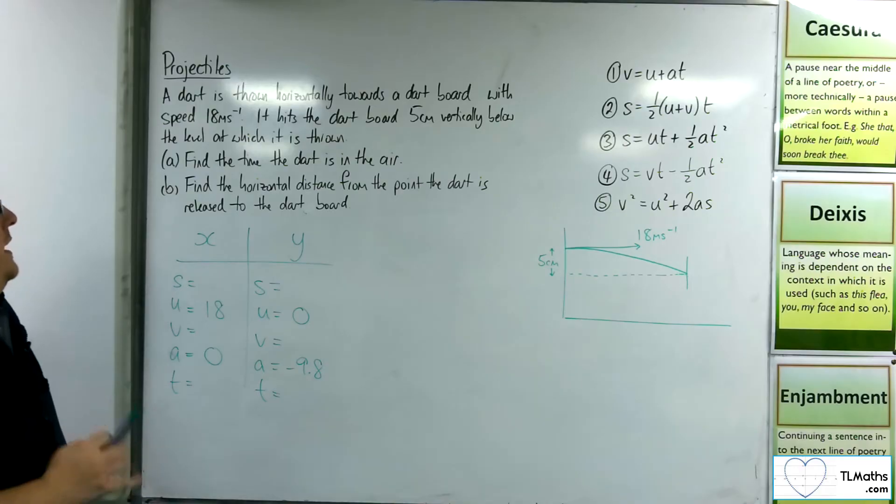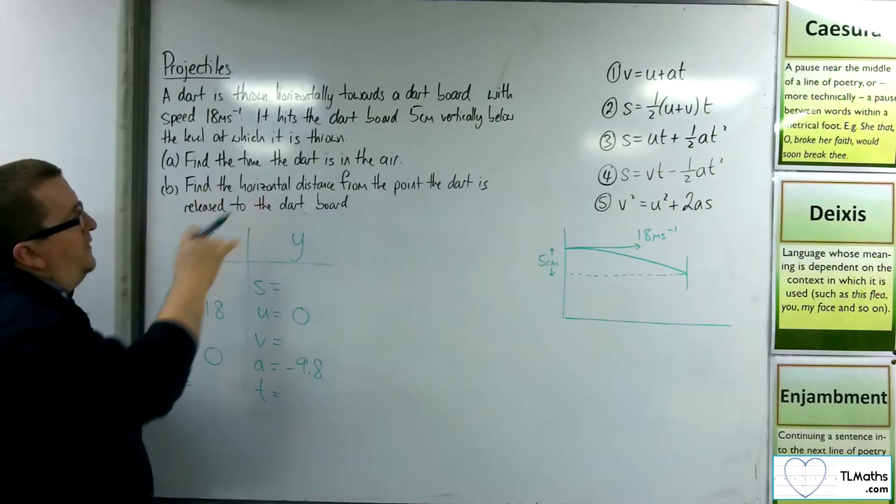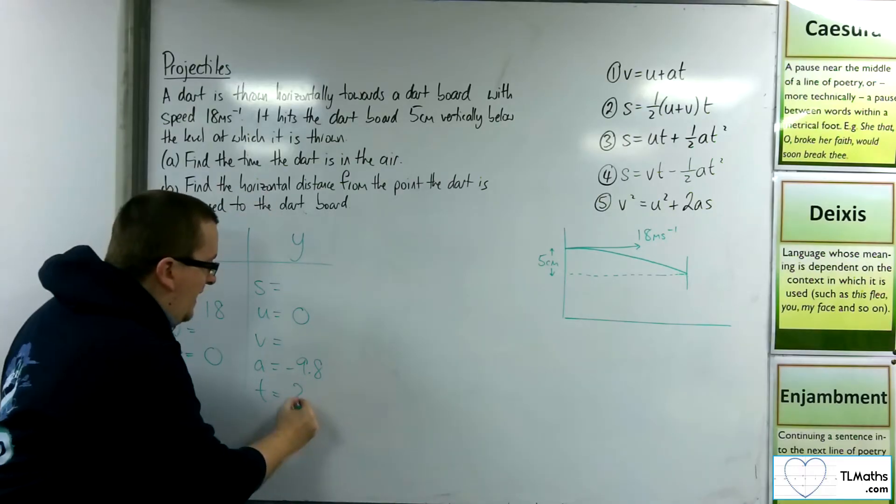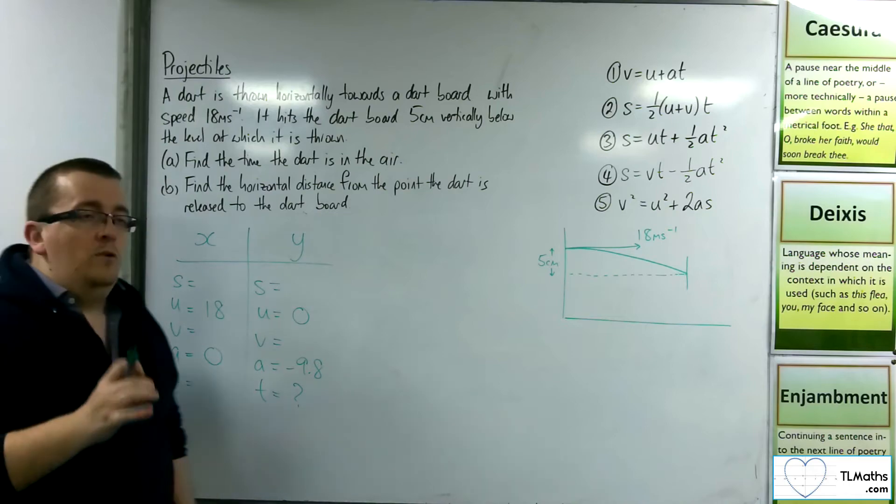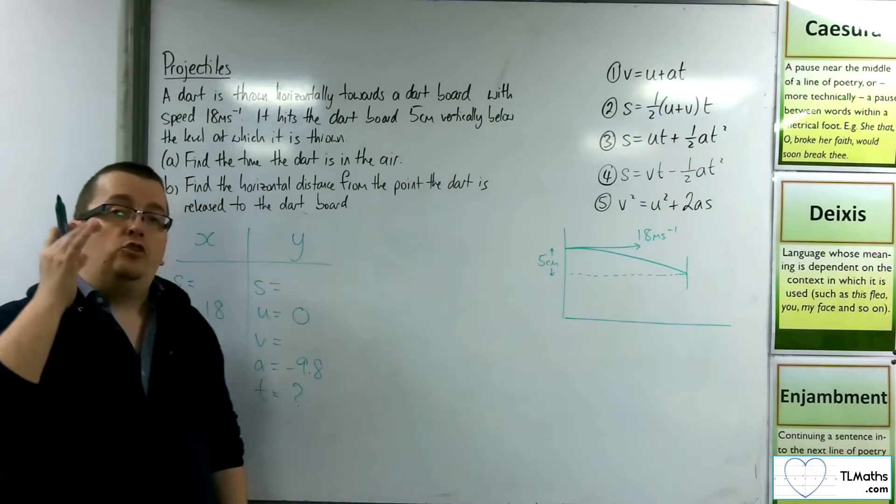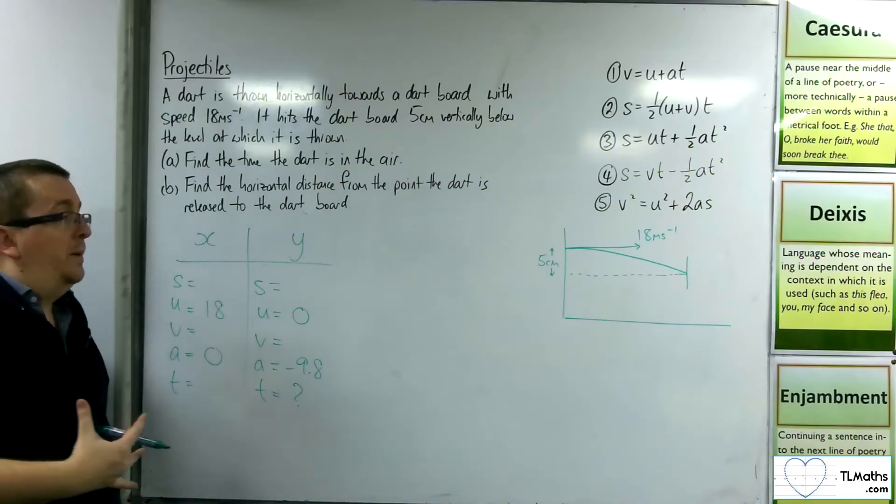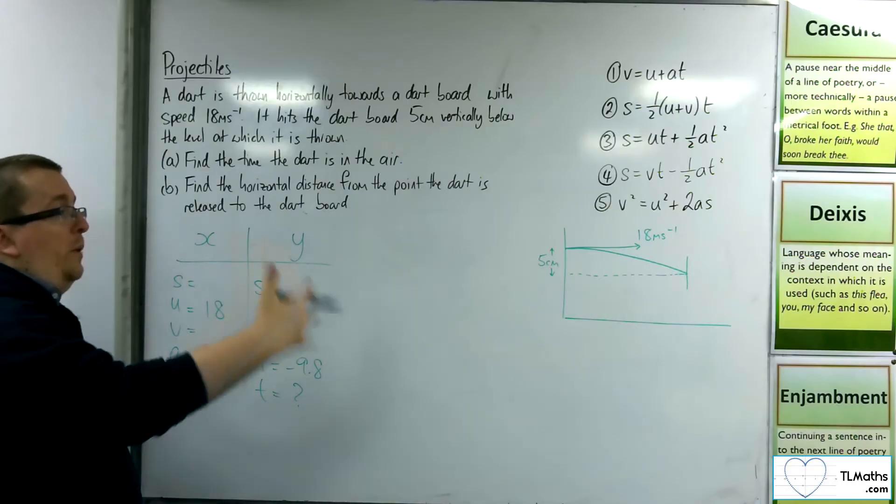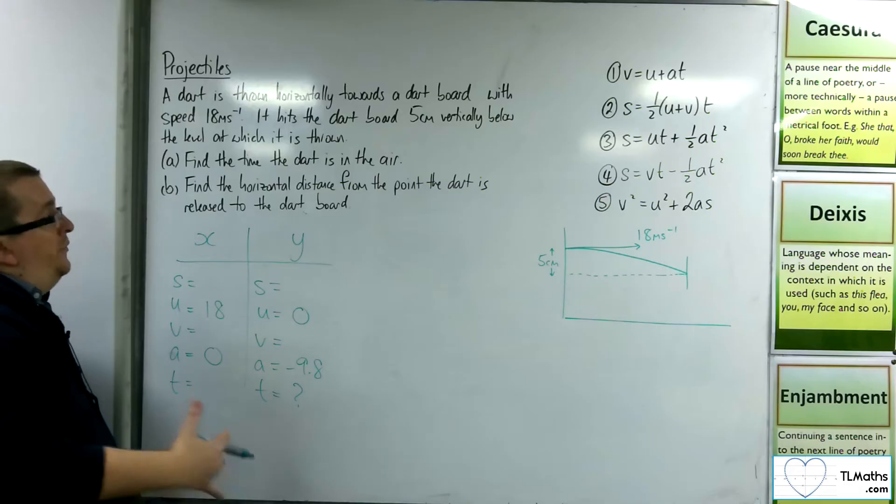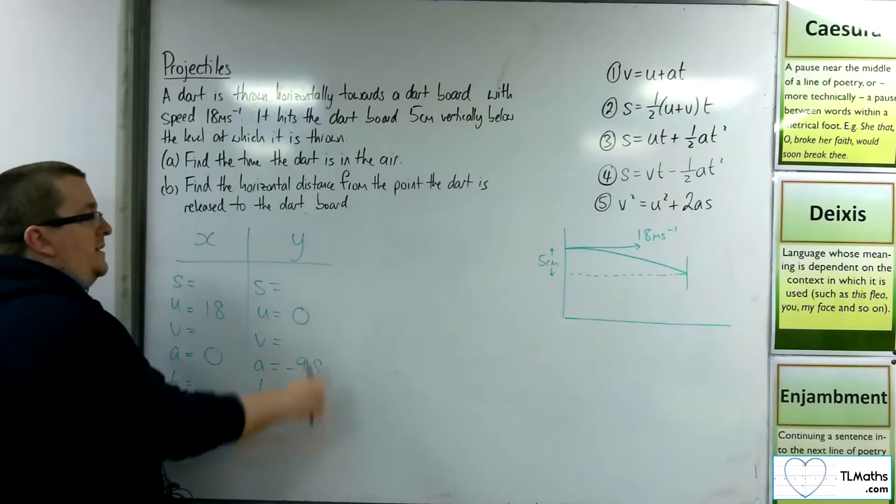Now the other bit is that we need to find the time that the dart is in the air. So we need that time there. The only other bit of information is we know that it drops 5 centimeters in its vertical displacement from where it starts to where it ends up. So that means that the displacement, we've got to be in meters.